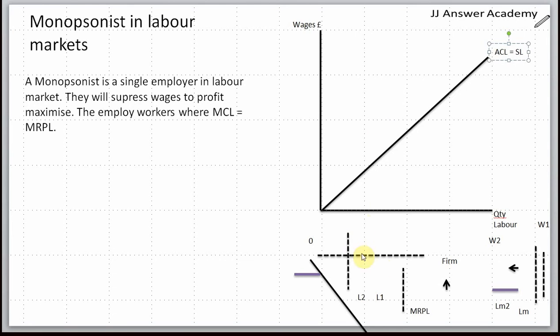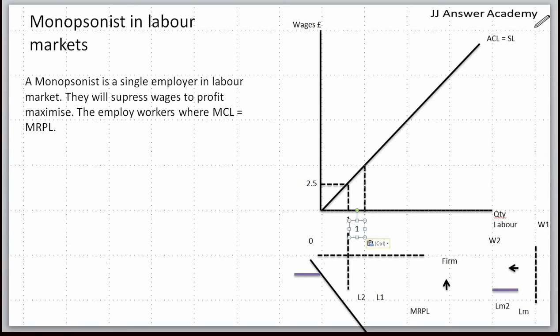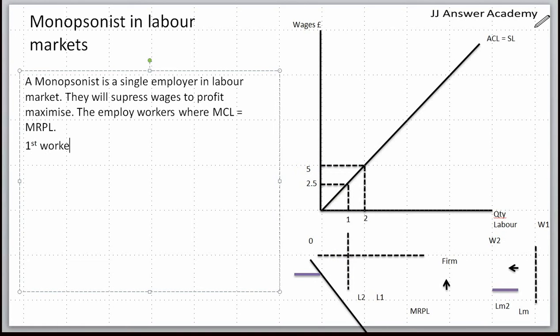You need to understand this first. If you employ the first worker, you're paying that worker 2.5 pounds. If you employ the second worker, you'll have to pay both workers five pounds. So for the first worker you paid 2.5 pounds, for the second worker the wage was five pounds.